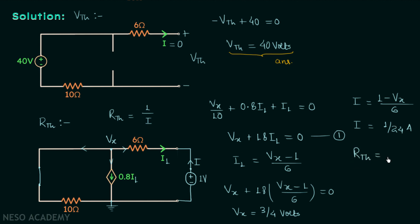Putting I equal to 1/24 ampere, RTH equals 1 volt divided by 1/24 ampere, which gives RTH equal to 24 ohms. In this way we have obtained the Thevenin's equivalent resistance, and this is our answer.